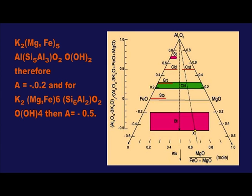For example, for biotite K(MgFe)5·Al·Si3·Al·O10·(OH)2, A equals minus 0.2. And for biotite K(MgFe)6·Si6Al2·O6·(OH)4, A equals minus 0.5.